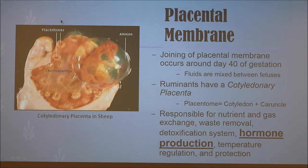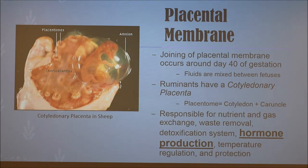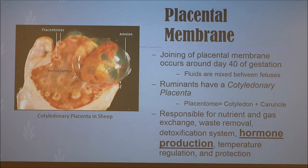Here's an example of that in sheep, just reviewing the anatomy. The cotyledon is the fetal side of the placenta, and the caruncle is the maternal side. When those two join, they are called the placentome. The placenta is responsible for nutrient exchange between the mother and fetus, gas exchange, removal of waste, filtration and detoxification, and it also produces a large amount of hormones — which is the problem. It also maintains temperature regulation and protects the growing fetus.